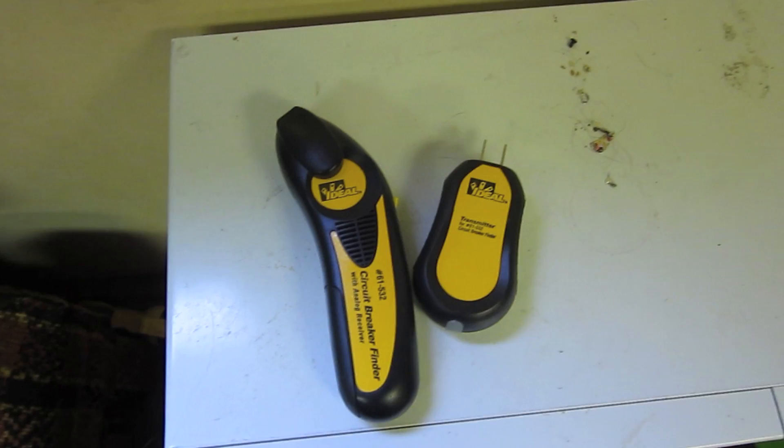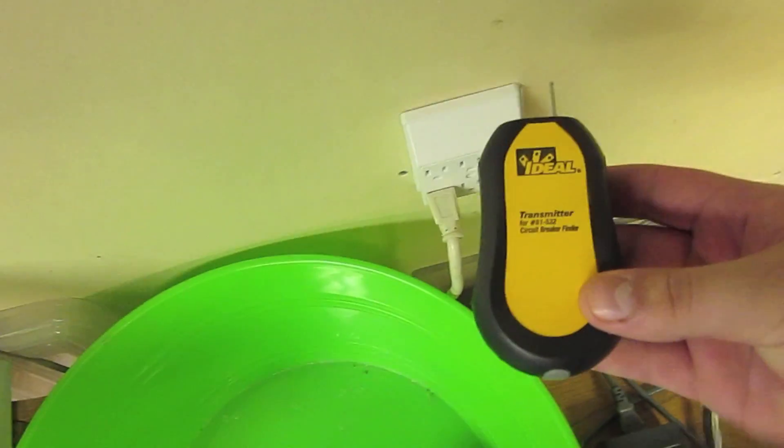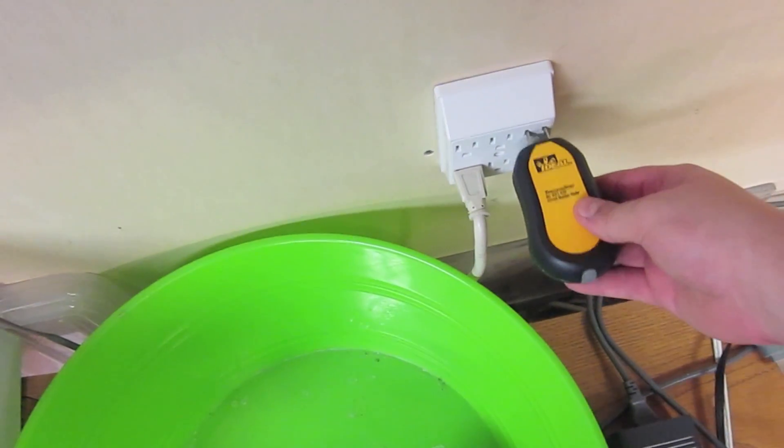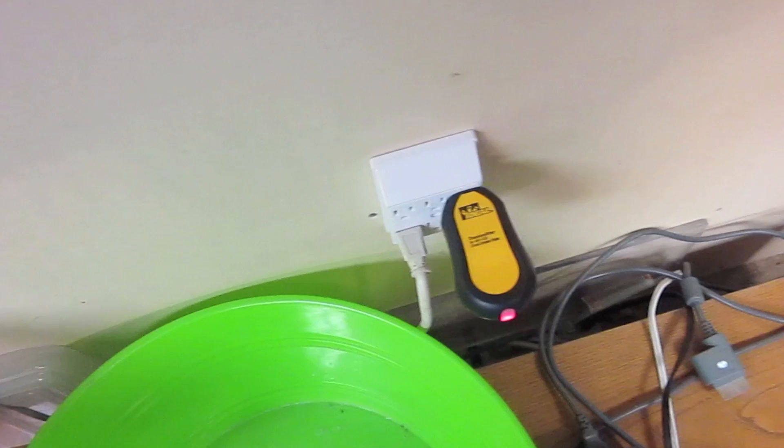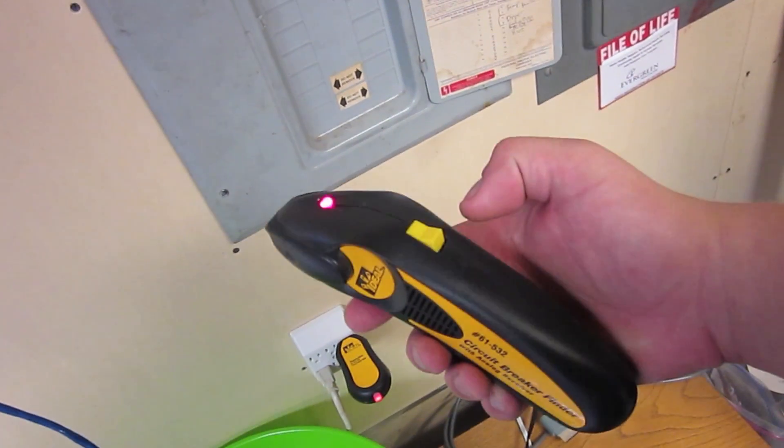These are actually pretty cool and allow me to demonstrate how they work. Take our items here, plug the transmitter into the outlet you want to discover. Can't even really tell what's going on. But then, take the receiver and flip it on.